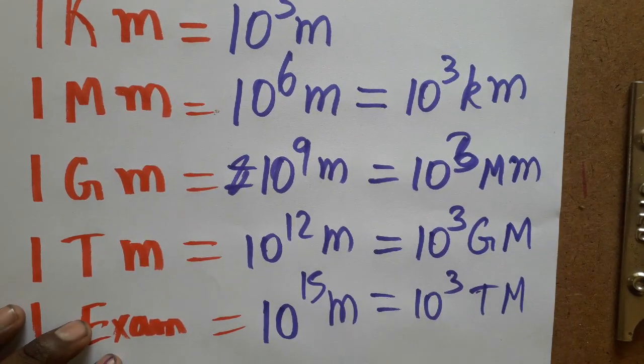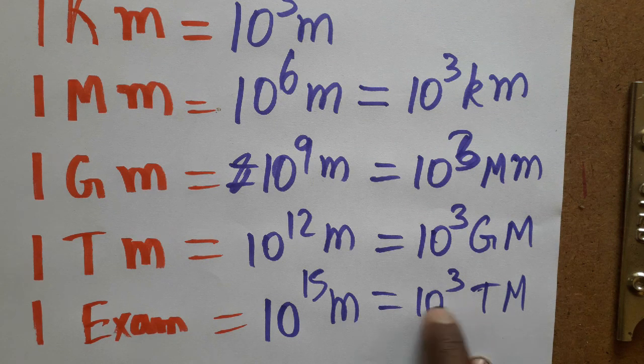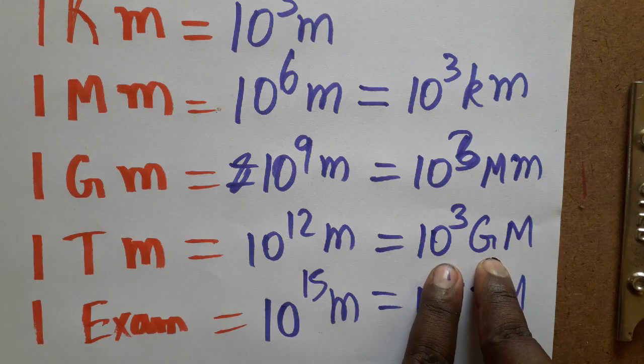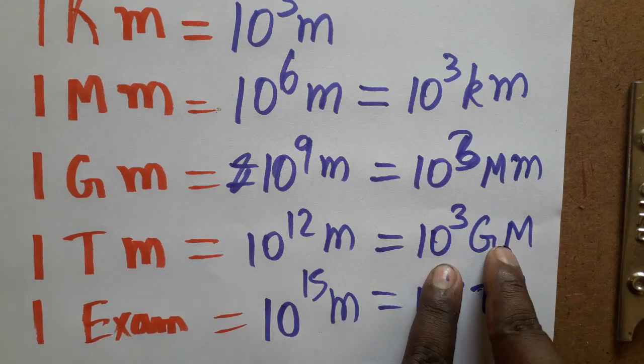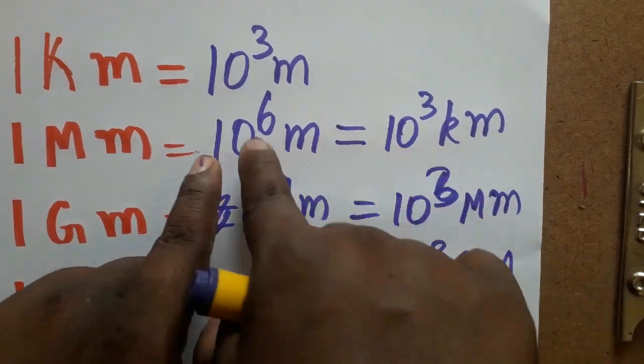Terameter is 12, 12 plus 3 is 15, the power will get as 15. Gigameter is 9, 9 plus 3 will get as 12. Mega is 6, 6 plus 3 will get as 9. Kilo is 3, 3 plus 3 will get as 6.